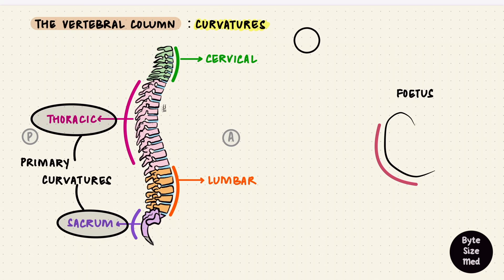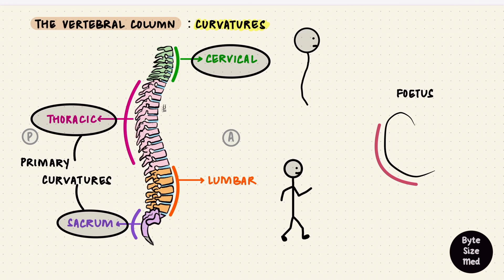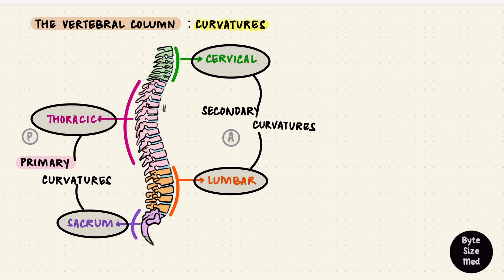During infancy, when the head gets held up, that creates a secondary curvature in the cervical vertebral region. Standing upright and walking leads to the lumbar curvature. So these two are secondary curvatures. These are the normal spinal curvatures.